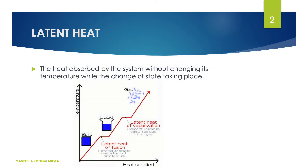First we are going to start about latent heat. What is the meaning of latent heat? It is the heat absorbed by the system without changing its temperature while the change of state is taking place. Now in this graph you can see there is a change of state. At the first part you can see the solid is changing into liquid. When the temperature is gradually increasing, the solid will be turned into liquid.